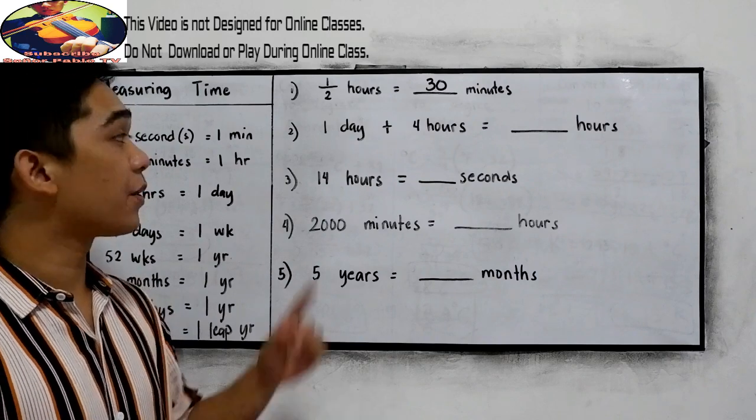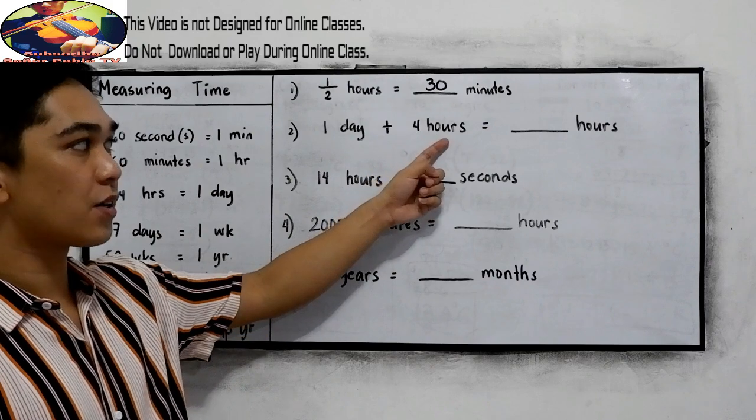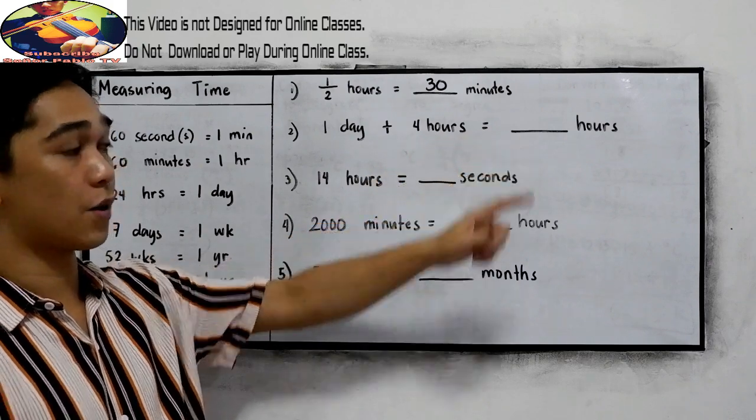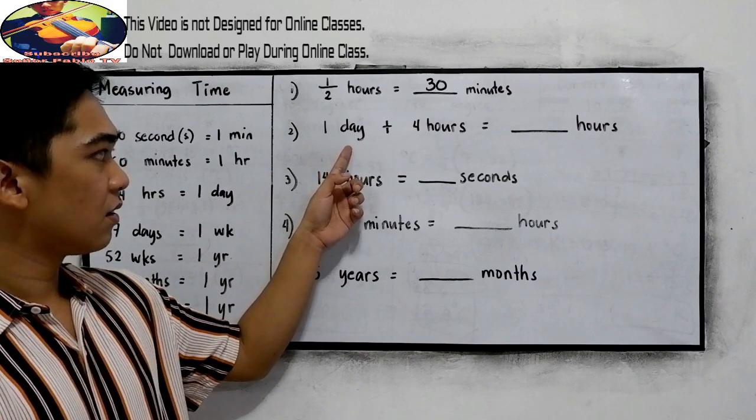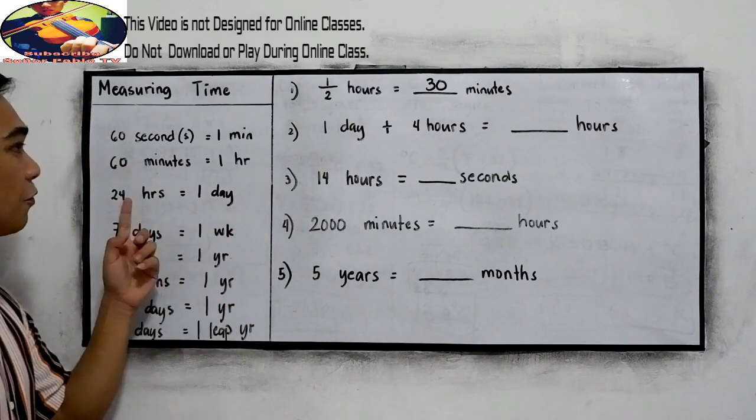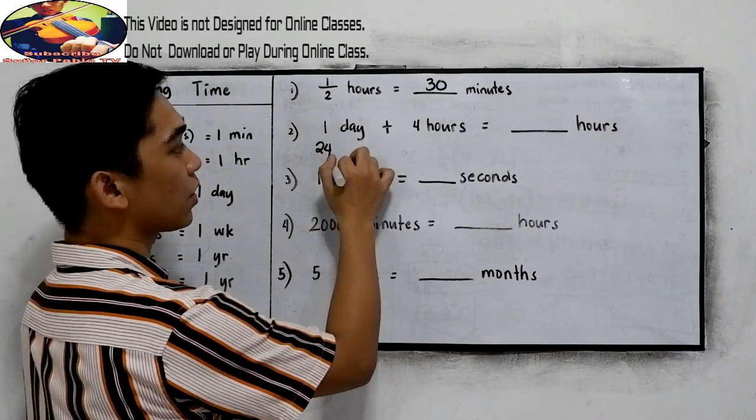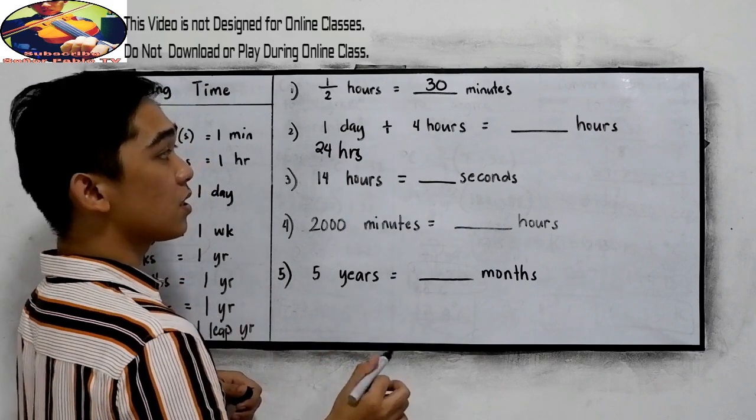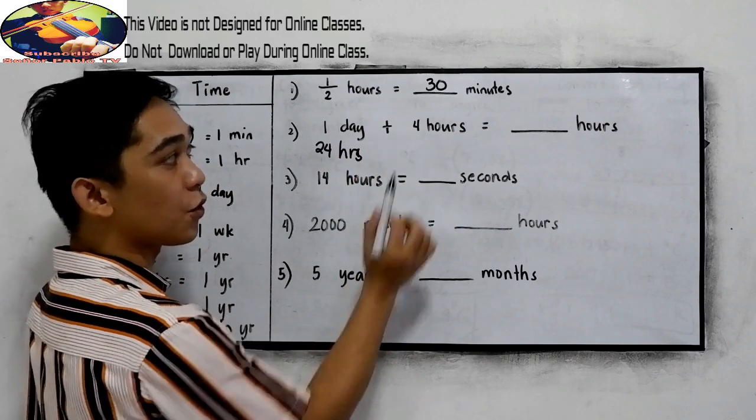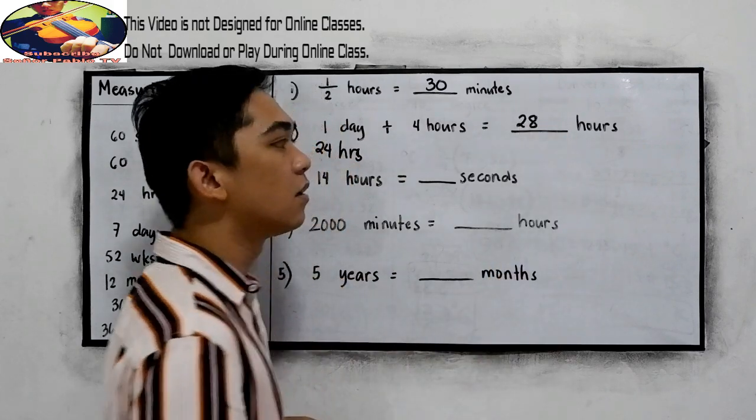Next, number 2. 1 day plus 4 hours is equal to blank hours. 1 day has 24 hours. We are going to write 24 hours here. Then we just need to add 24 plus 4. That is 28 hours.